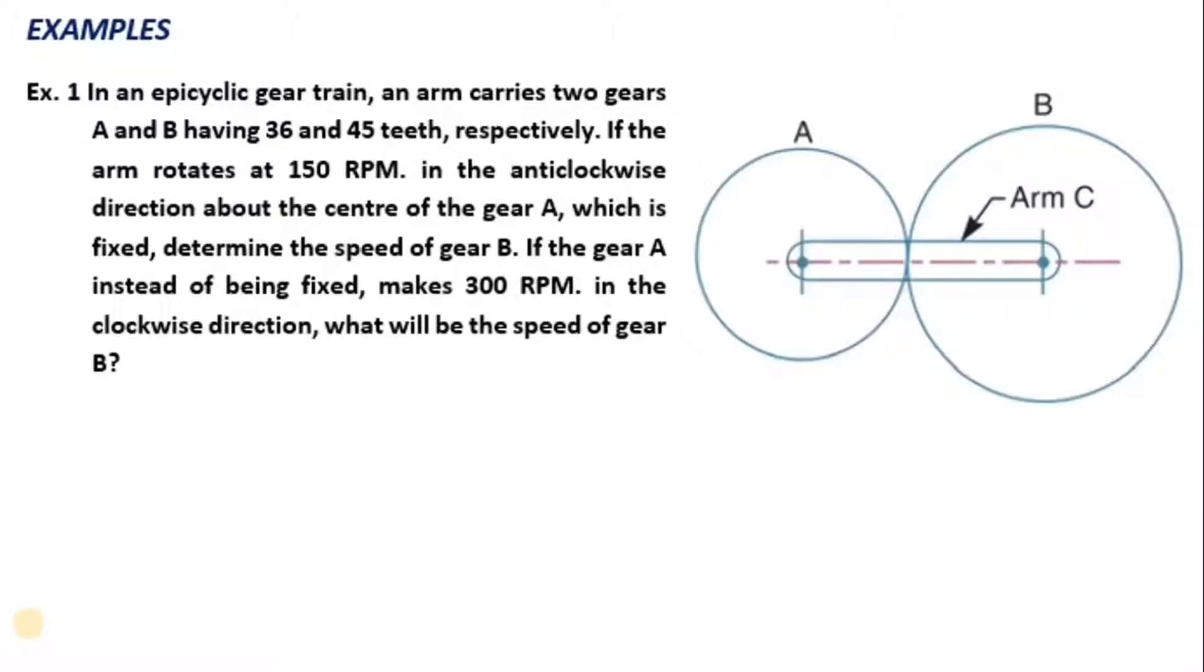If the gear A instead of being fixed makes 300 RPM in the clockwise direction, what will be the speed of gear B?